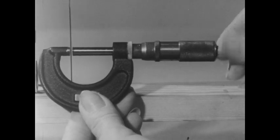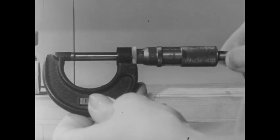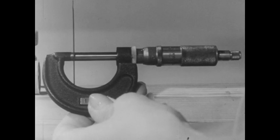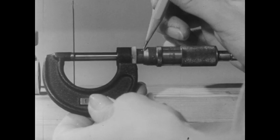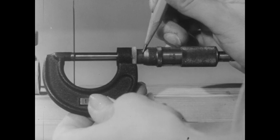To tell when the caliper is in contact with both sides of the shield, we depend on our sense of touch. We can measure the thickness of the shield to within a hundredth of a millimeter with the micrometer.